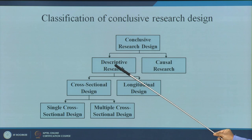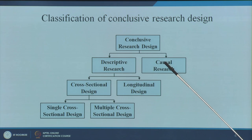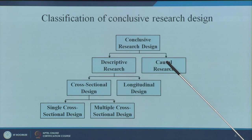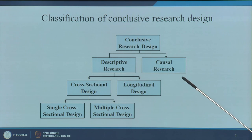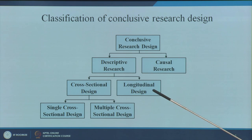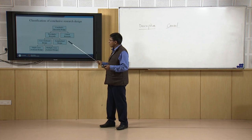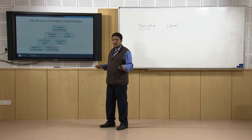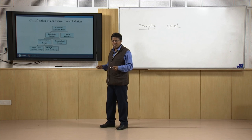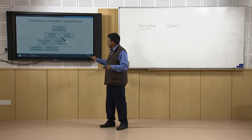Conclusive research has two types: descriptive and causal. Causal research is basically experiments — all experiments fall into causal research. In basic engineering and most scientific research — physics, chemistry, biology — they are all causal research.